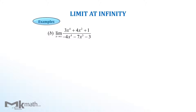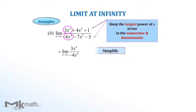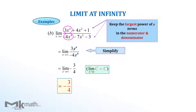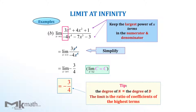How about the second example? Again, you need to take the largest power of x from the numerator and denominator, and then simplify the fraction. Since the limit of a constant is the constant, the limit is equal to that constant. If the degree of the numerator is the same as the denominator, then the limit is the ratio of those coefficients.